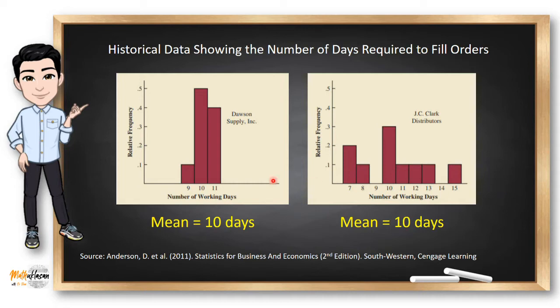Looking at the variability in delivery times indicated by the histograms, which supplier would you prefer? For most firms, receiving materials and supplies on schedule is important.